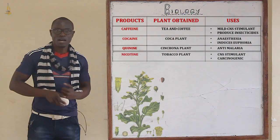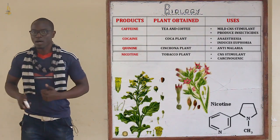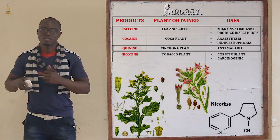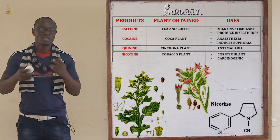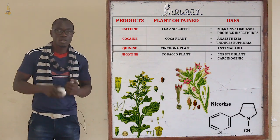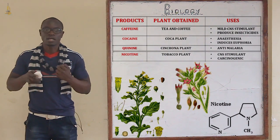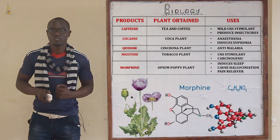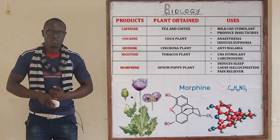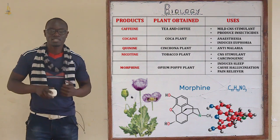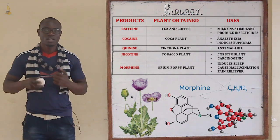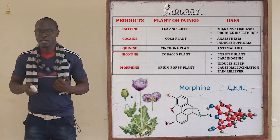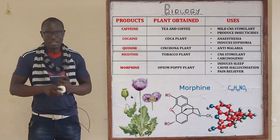Nicotine is obtained from the tobacco plant. It acts as a central nervous system (CNS) stimulant and is also highly carcinogenic, meaning it can cause cancer. Morphine is obtained from the opium plant. It induces sleep and causes hallucinations, and is also used in hospitals as a strong pain reliever.